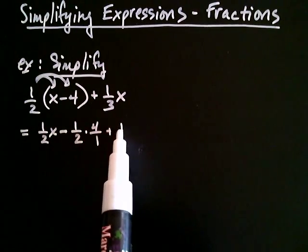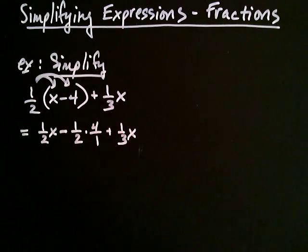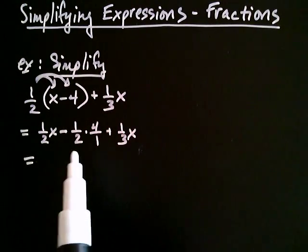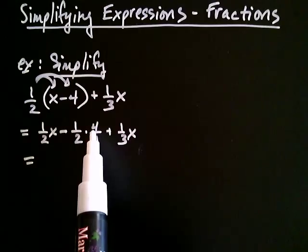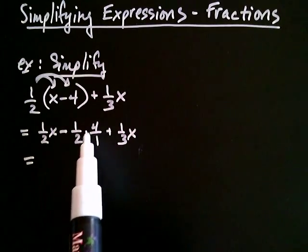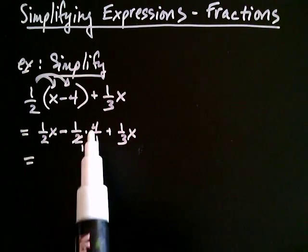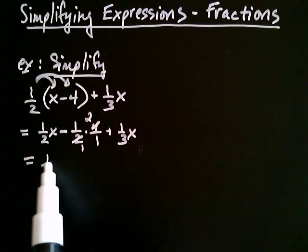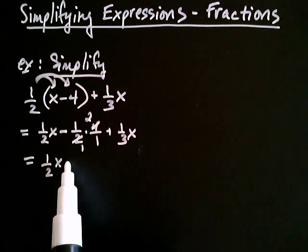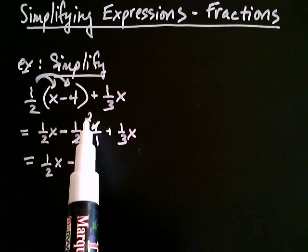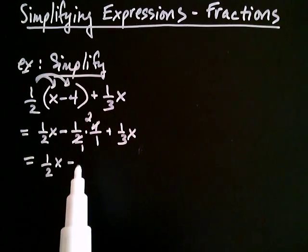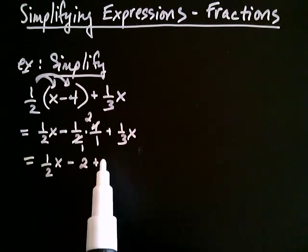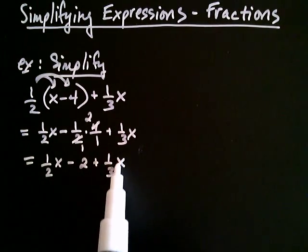I still have the plus one third x there. Continuing with multiplication — in this case I can cancel: two goes into four twice, so this becomes a one and that becomes a two. What I'm left with is one half x, minus — well, one times two is two over one — so that's just minus two, plus one third x.